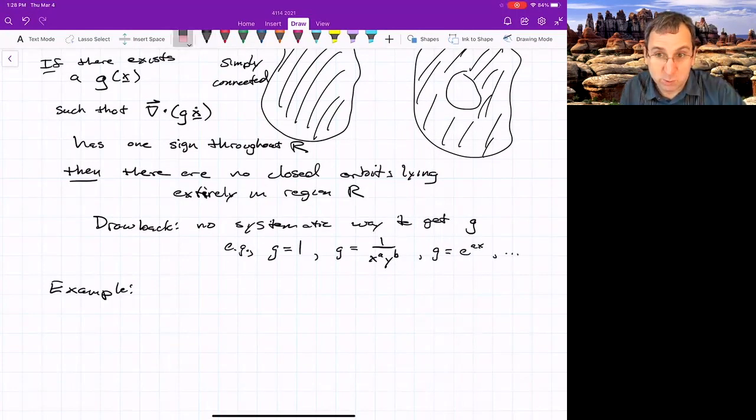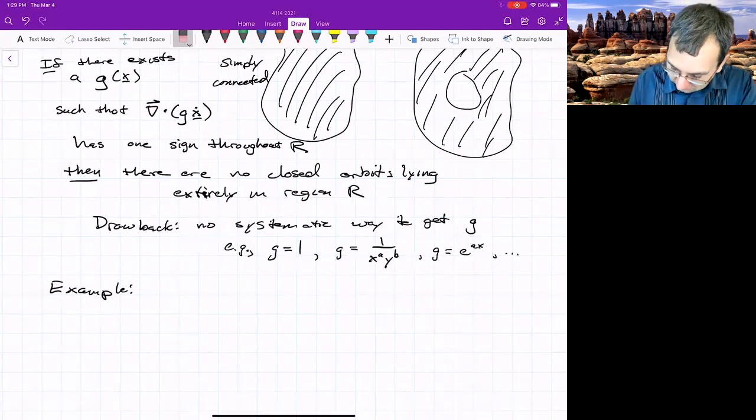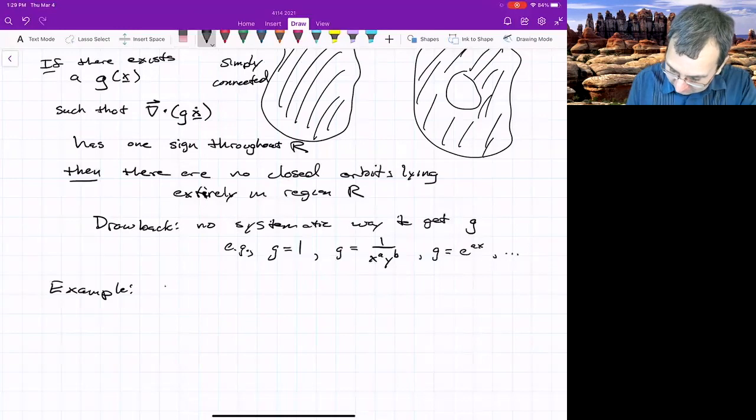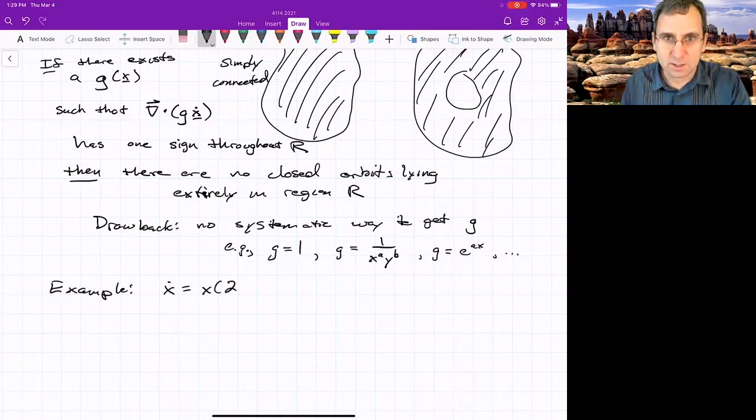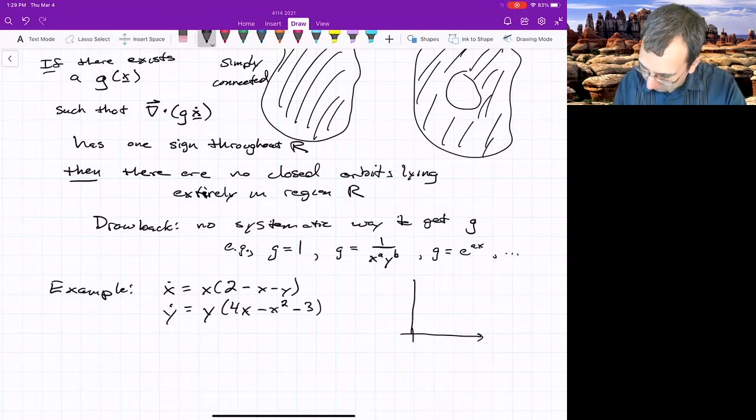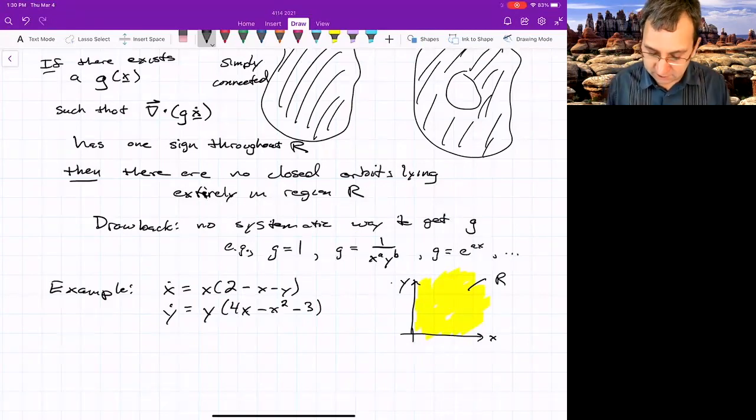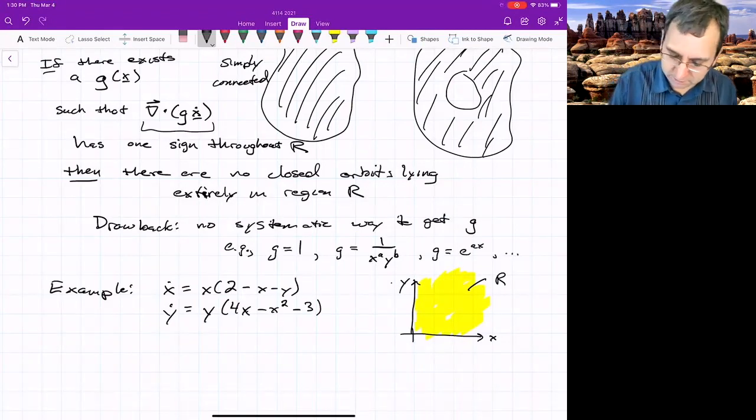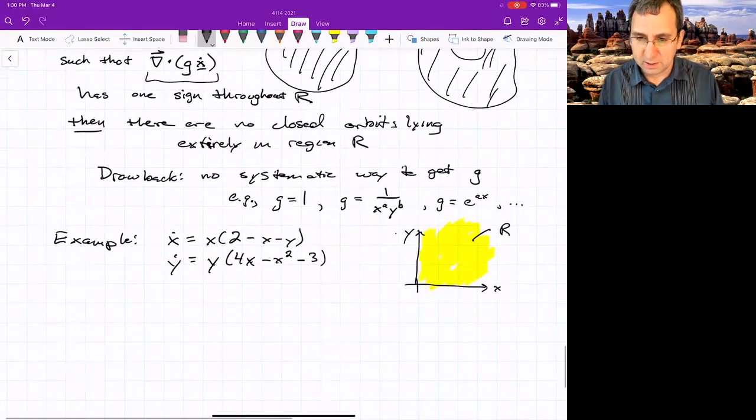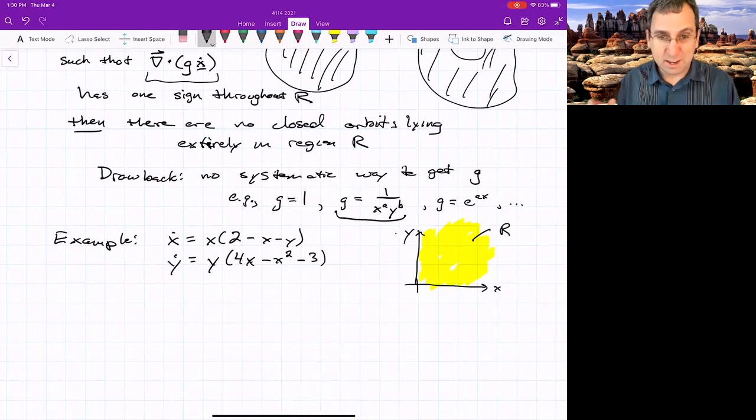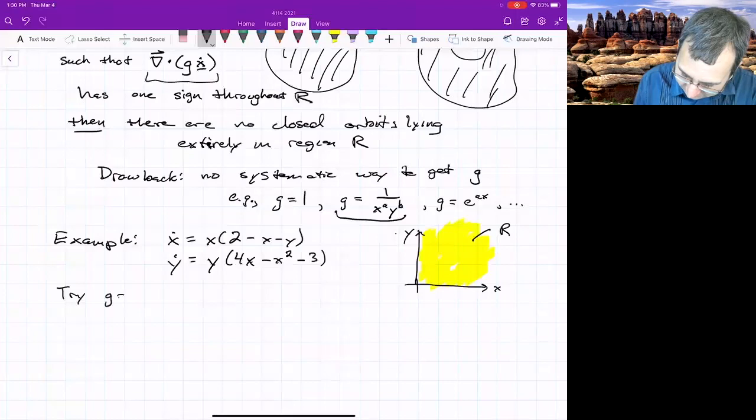So for example, suppose we have a hunch that some particular system doesn't have closed orbits, at least in a particular region. So here's a system. It looks kind of like the rabbits and sheep, but it's not the rabbits and sheep. We'll just limit ourselves to the first quadrant. So that'll be our region R. So here's X and Y. So we want to see if can we pick some G that satisfies this? The divergence of G times X dot has one sign throughout R. I'm going to go with this guess and say maybe A and B equal one. I just have some intuition about that. Let's try G equals one over XY.